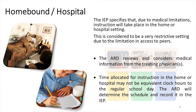Homebound and hospital supports are considered to be very restrictive settings due to the limitations in access to peers. To be considered for homebound services, the ARD reviews and considers medical information from the treating physicians as part of the decision-making. The IEP must specify that, due to medical limitations, instruction will take place in the home or hospital setting if the data supports this decision. Time allocated for instruction in the home or hospital may not be equivalent clock hours to the regular school day. The ARD will determine the schedule and record it in the IEP.